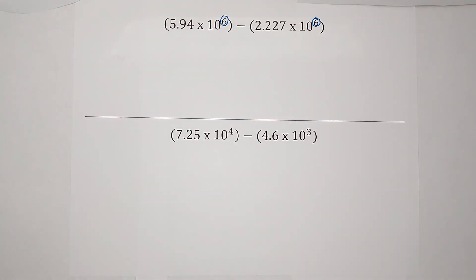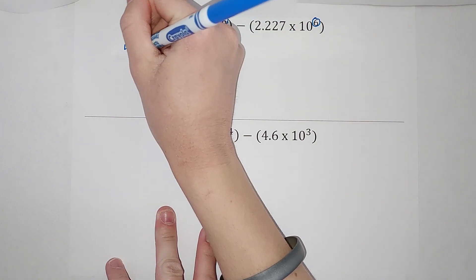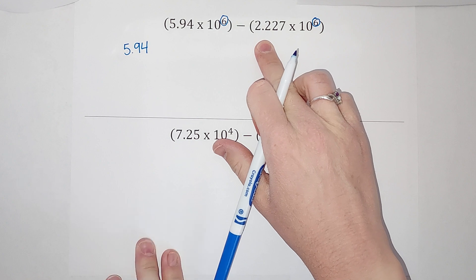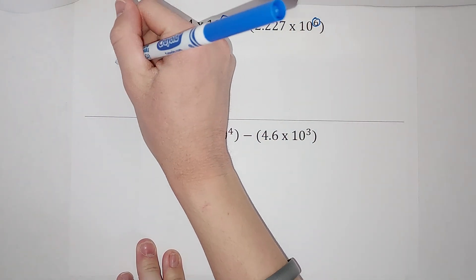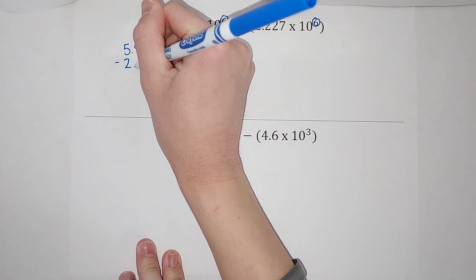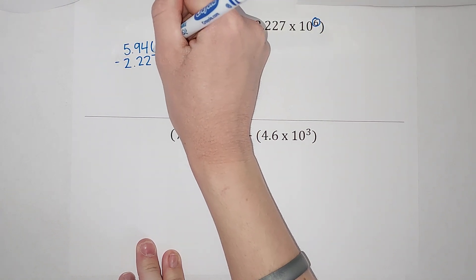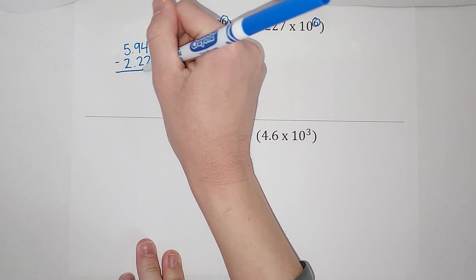So go ahead and just subtract them. So I'm going to take 5.94 and subtract 2.227. When we subtract decimals, we line the decimals up. And then if they're not even, we can go ahead and add a zero there.